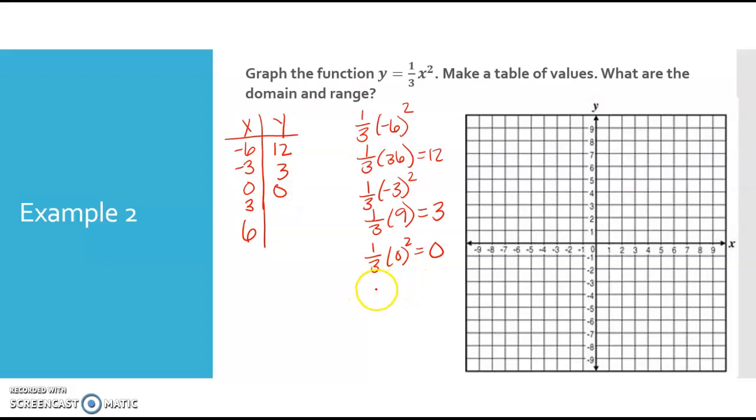And now I just keep going. 1/3 of 3 squared. 3 squared is 9, so 1/3 of 9 we already know is 3. And 1/3 times 6 squared. Not negative 6, positive 6. My bad. 1/3 times 36, so 36 divided by 3 is 12.